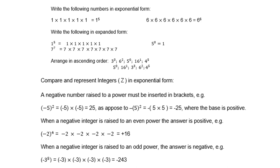Now, if we compare and represent integers in exponential form, that means we bring in negatives. We must remember: a negative number raised to a power must be inserted in brackets. For example, negative 5 all squared is the same as negative 5 times negative 5, which is a positive 25, as opposed to a negative outside the bracket — where it is 5 times 5, which is 25, and then becomes negative 25.